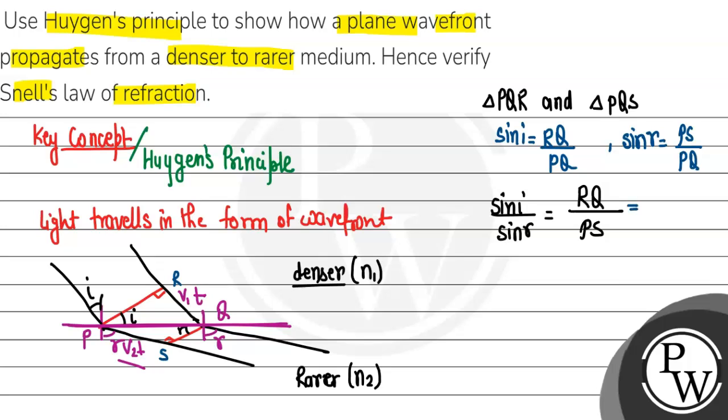And PS is the distance in the rarer medium, which is v2 times t. So sin i upon sin r becomes v1 t upon v2 t, which simplifies to v1 upon v2.